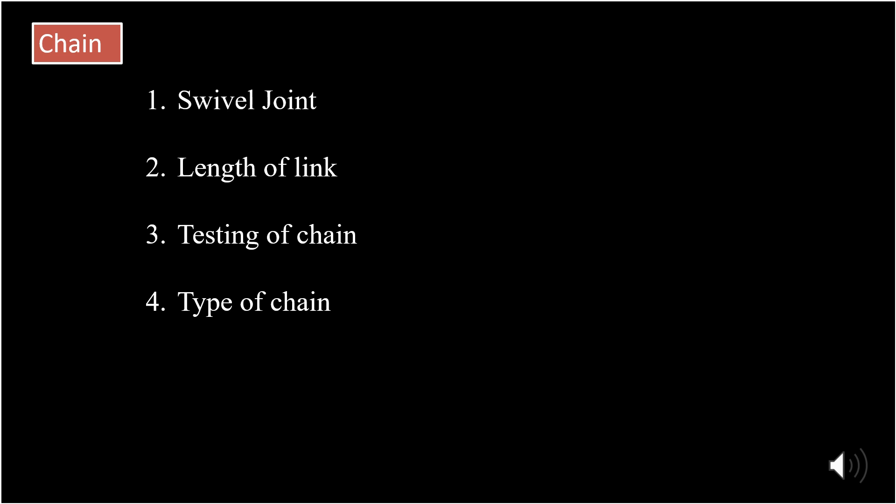For a 5-meter chain, the number of links is 25. For a 10-meter chain, the number of links is 50. For a 20-meter chain, the number of links is 100. For a 30-meter chain, the number of links is 150.